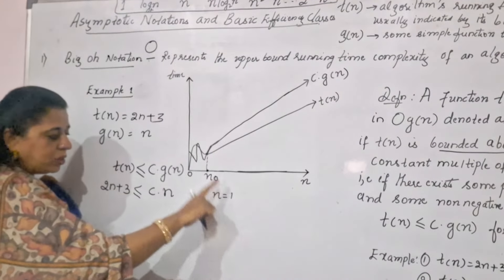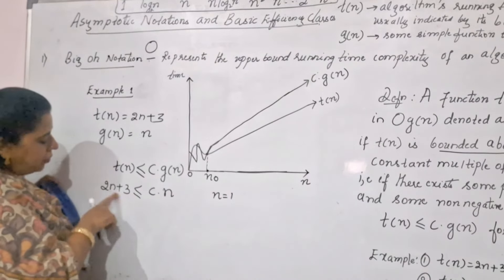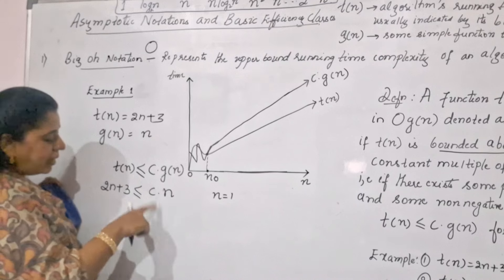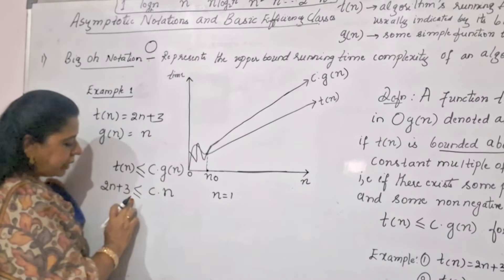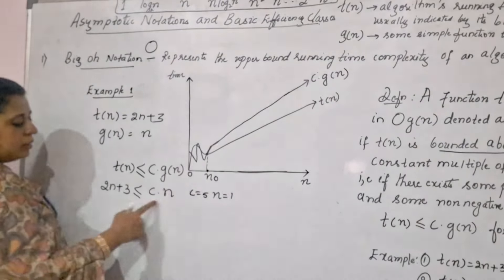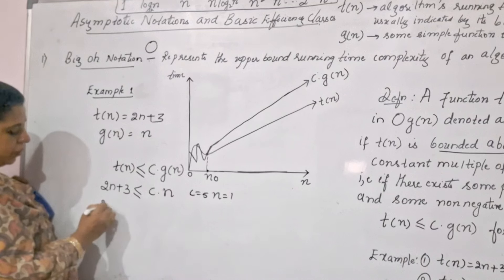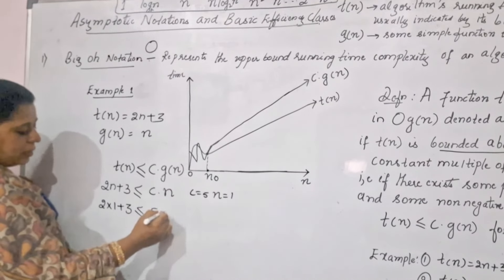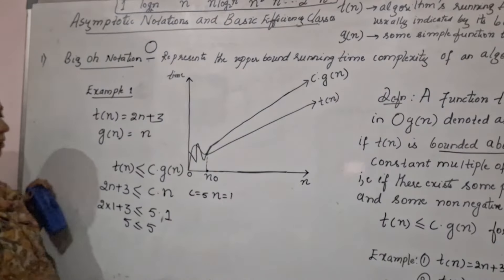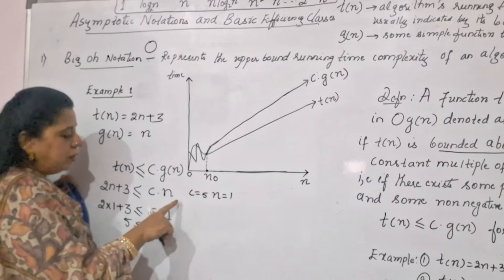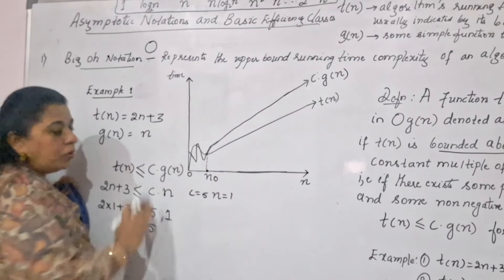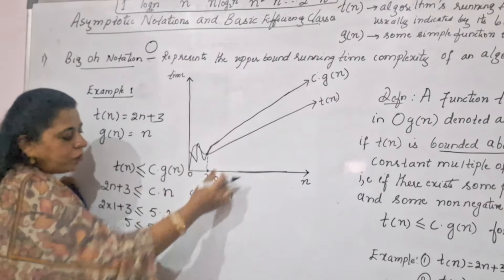Looking at the constants here — 2 and 3, so 5 — if you take c = 5 and n = 1, you get 5·1 = 5 on the right-hand side. Substituting: 2(1) + 3 = 5 ≤ 5·1 = 5. This is satisfying — 5 equals 5, so the equation is true. That means for n = 1 and c = 5, c·g(n) is at or above t(n). But it should continue to be above for all subsequent values of n as well — it should not fall below.